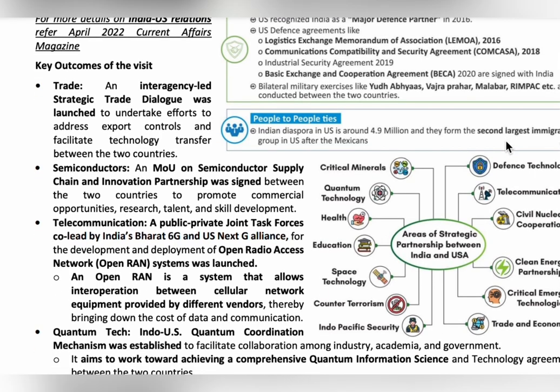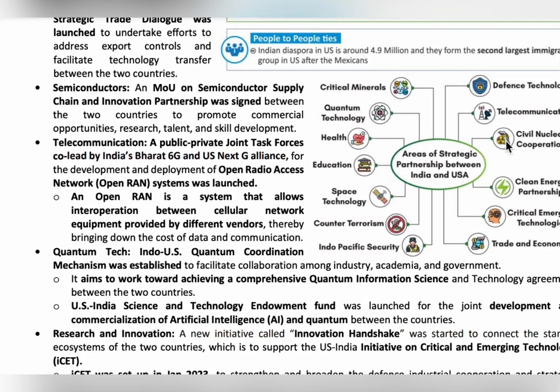In the telecommunications sector, Open Radio Access Network (Open RAN) was launched jointly by India's Bharat 6G and the US Next G Alliance to reduce the cost of data and communication. To achieve comprehensive quantum information sciences and technology, efforts were made to develop and commercialize artificial intelligence and quantum technology between the two countries.